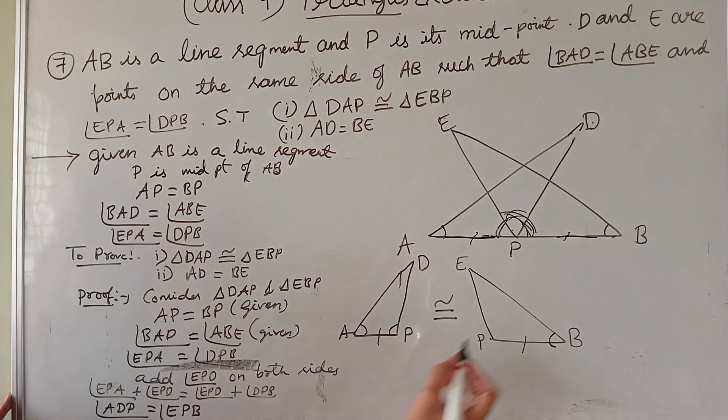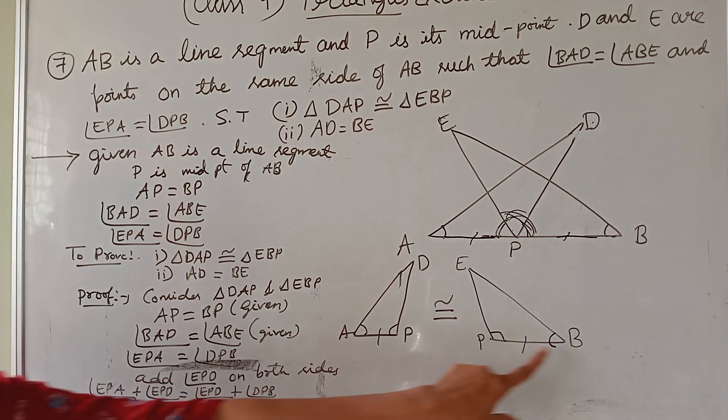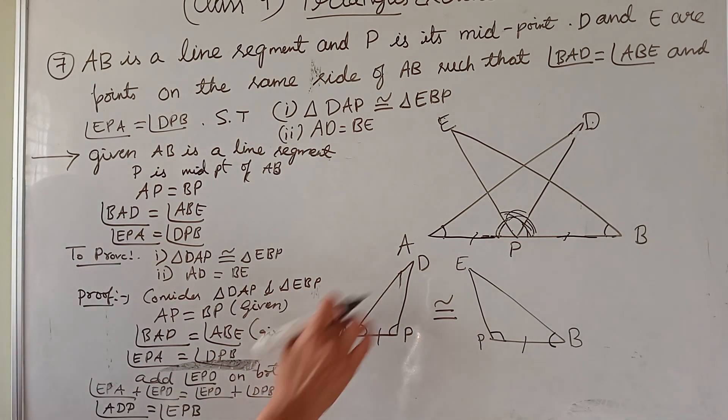Angle EPB. Now I can tell this angle and this angle are equal. This is APD. Angle P equal to angle P.